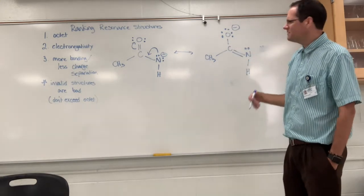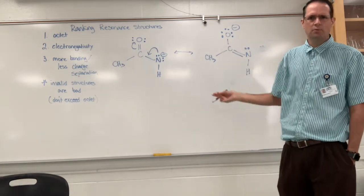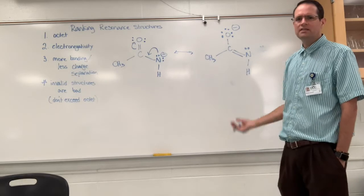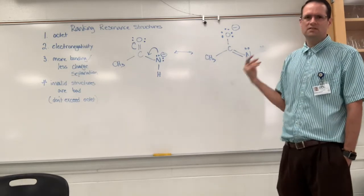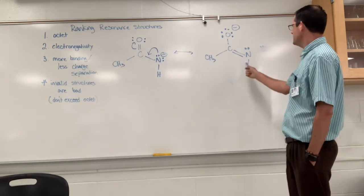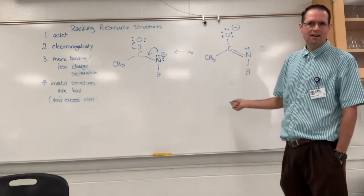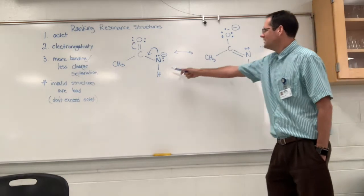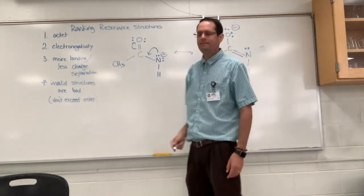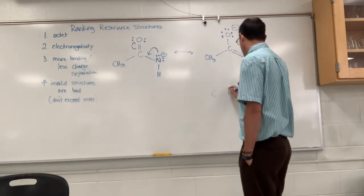I'm not going through the process of figuring out where those bonds go and where the charges go. I'm just drawing it quick, and what I'm focusing on here today is describing how you decide if it's a good or bad resonance structure. Everything here on the right has an octet. So octet, octet. What do we do next? You look at electronegativity. Remember in your periodic table...